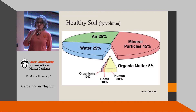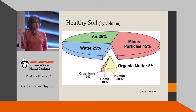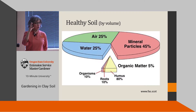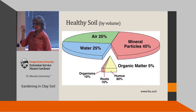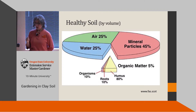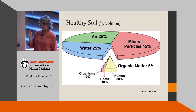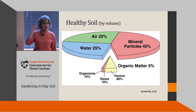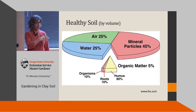Let's look at what healthy soil should be. Ideally, about half of it is pore space — gaps and holes reserved for air and water. Mineral particles should be about 45 percent, and the remaining 5 percent is organic matter, most of which is dead, thoroughly decomposed material called humus, with only a small amount consisting of living things like roots and organisms — earthworms, bacteria, fungi, springtails, and whatever else you can find in soil.